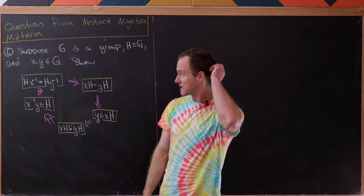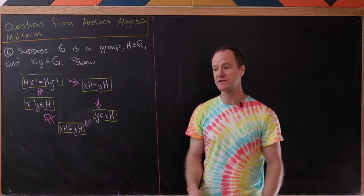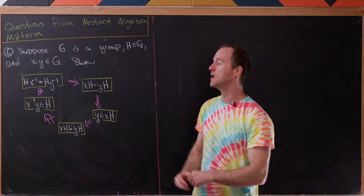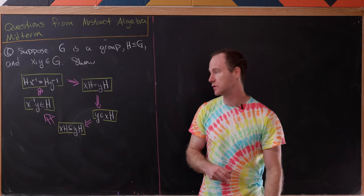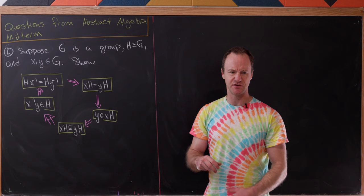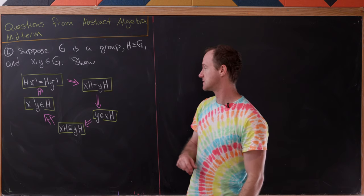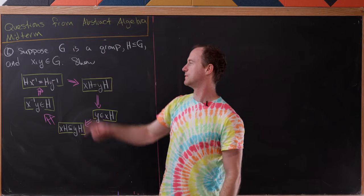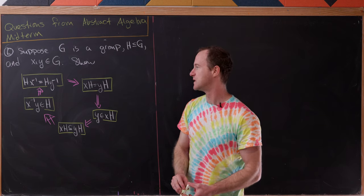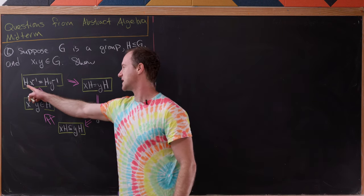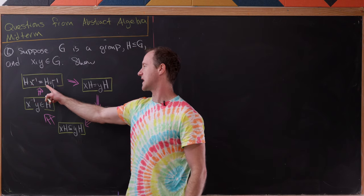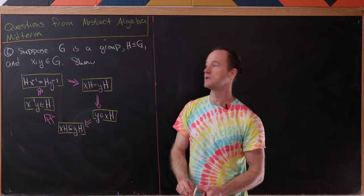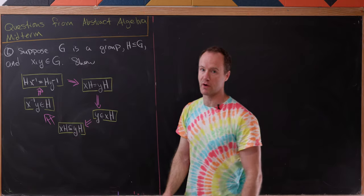We've got one more problem. The last problem was to reprove the coset equality theorem — proven in a previous video and as part of homework — but in a different order. This gives real understanding for how to work with cosets. The setup: G is a group, H is a subgroup of G, x and y are elements of G. We want to prove a circular chain: Hx⁻¹ = Hy⁻¹ implies xH = yH, and so on around the circle.